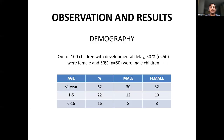Out of 100 children with developmental delay, 50 were female and 50 were male. Of these, 62% were in the less than 1 year age group (30 male, 32 female), 22% were in the 1 to 5 years age group (12 male, 10 female), and 16% were in the 6 to 16 years age group (8 male, 8 female).